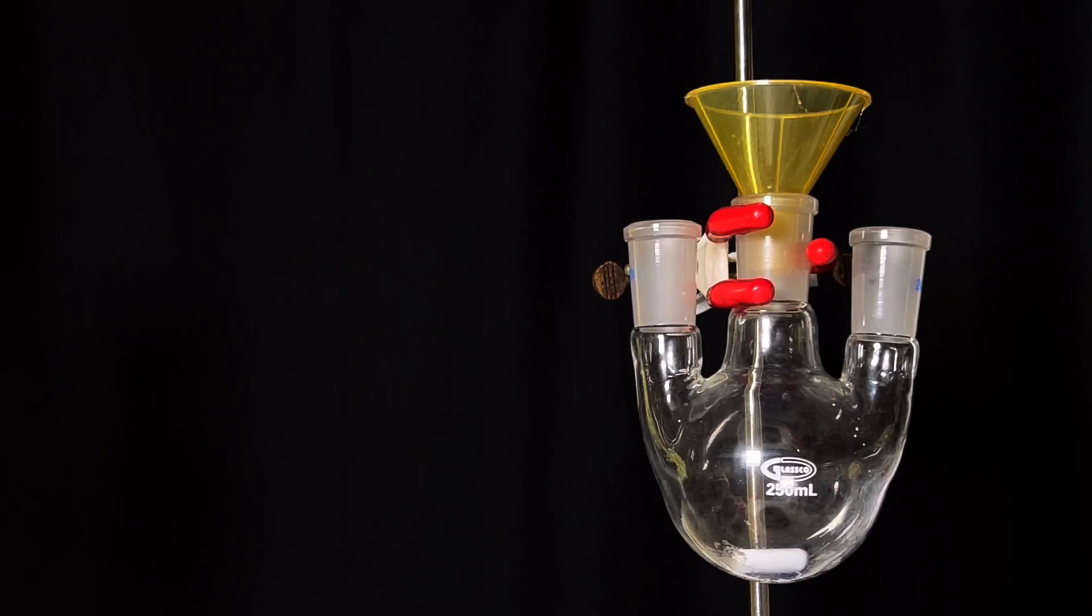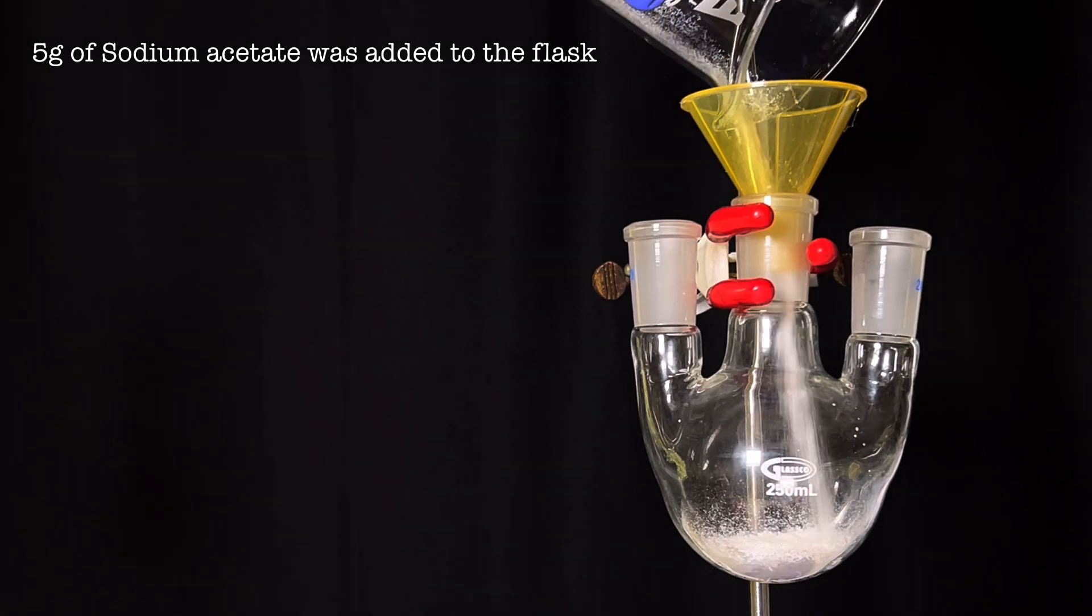Start by fixing a 250 ml three-neck round bottom flask on a stand using a clamp. A magnetic stirring bar was placed inside. A plastic powder funnel was placed on top and 5 g of sodium acetate was added to the flask.